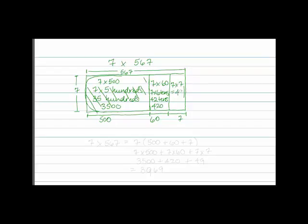So, now if we want to break down our problem, 7 times 567 equals 7 times (500 plus 60 plus 7), which equals 7 times 500 plus 7 times 60 plus 7 times 7.